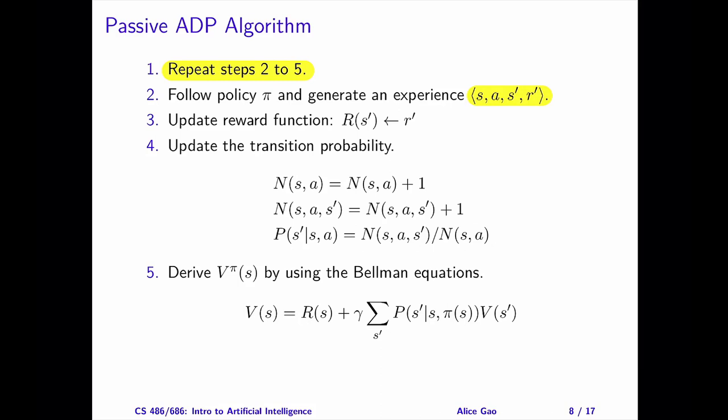Step 3: Update the reward function. Entering state S prime gives us a reward of R prime. If we haven't observed this reward before, we will record it for our reward function.